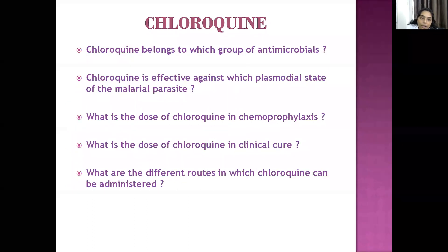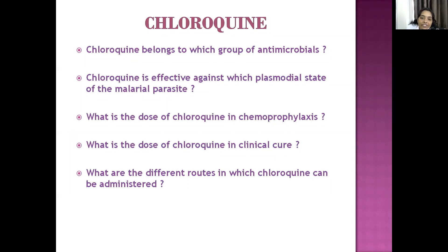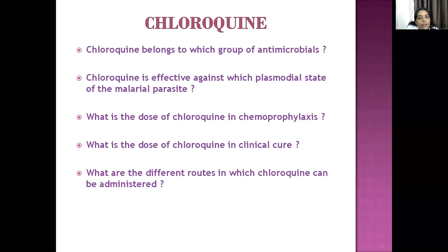The next drug is chloroquine, an anti-malarial drug. Chloroquine does not affect hepatic schizonts — it acts mainly on blood schizonts. It is a fast-acting blood schizonticide. It also affects gametocytes of Plasmodium vivax and P. ovale, but not P. malariae.